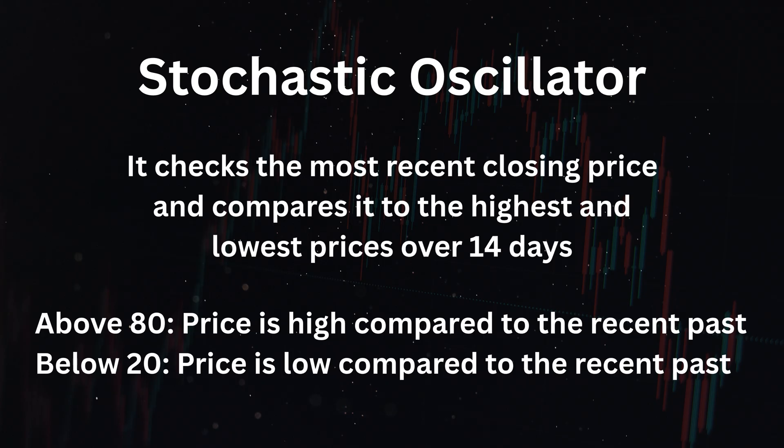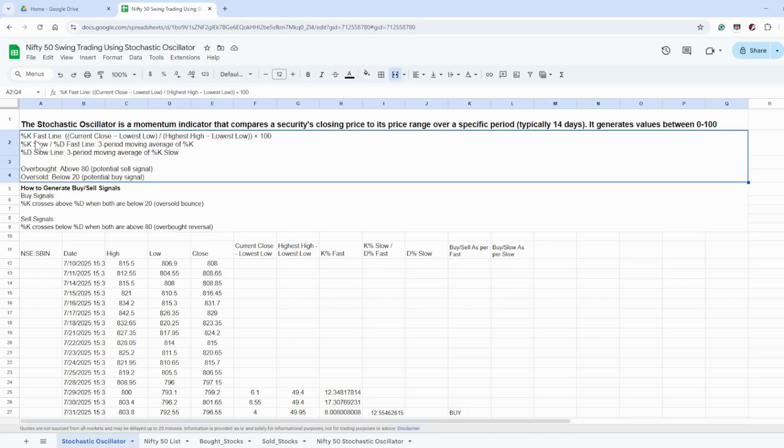We have chosen 14 days. It gives us a number between 0 and 100. If the number is above 80, that means the price is high compared to the recent past, whereas if it is below 20, the price is low compared to the recent past.